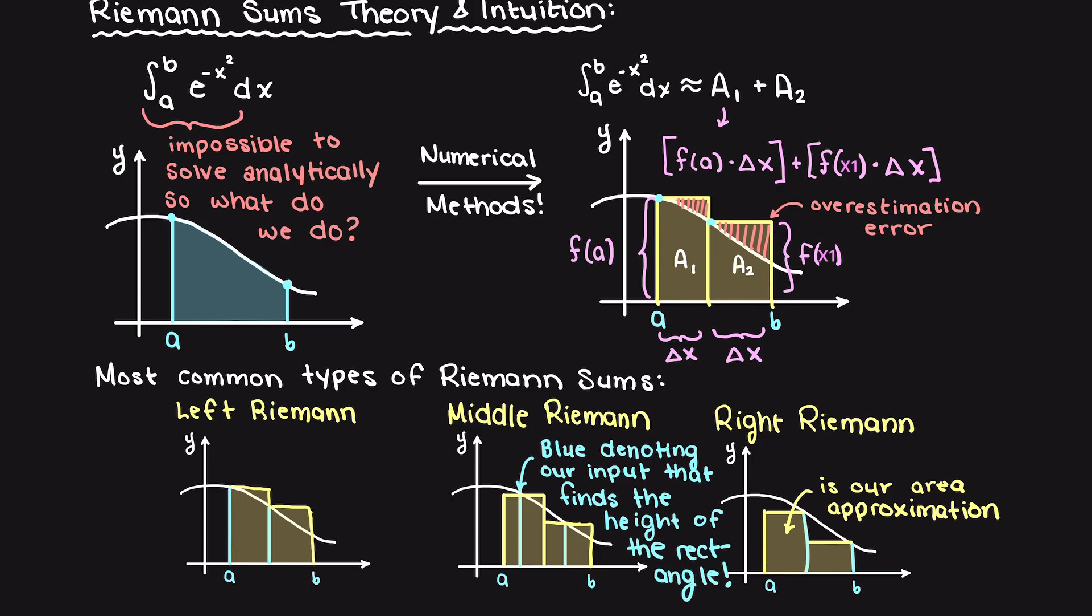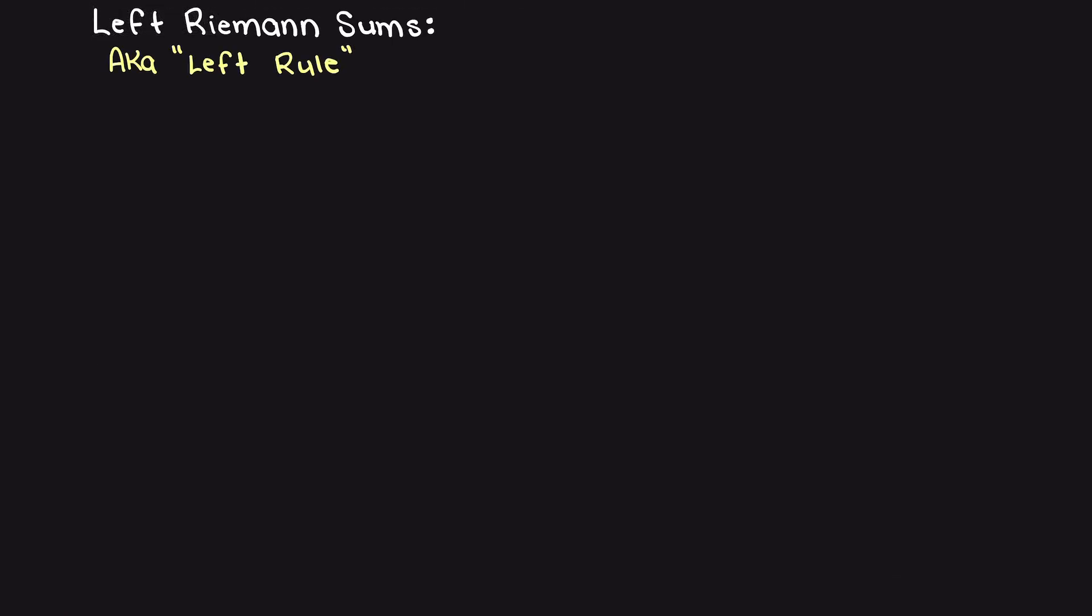So let's go through the theory of these three methods now. Let's begin with our left Riemann sum, which is also known as the left rule. As shown earlier in this method, the left part of our rectangle will go up until it hits the curve, then straight over and down.